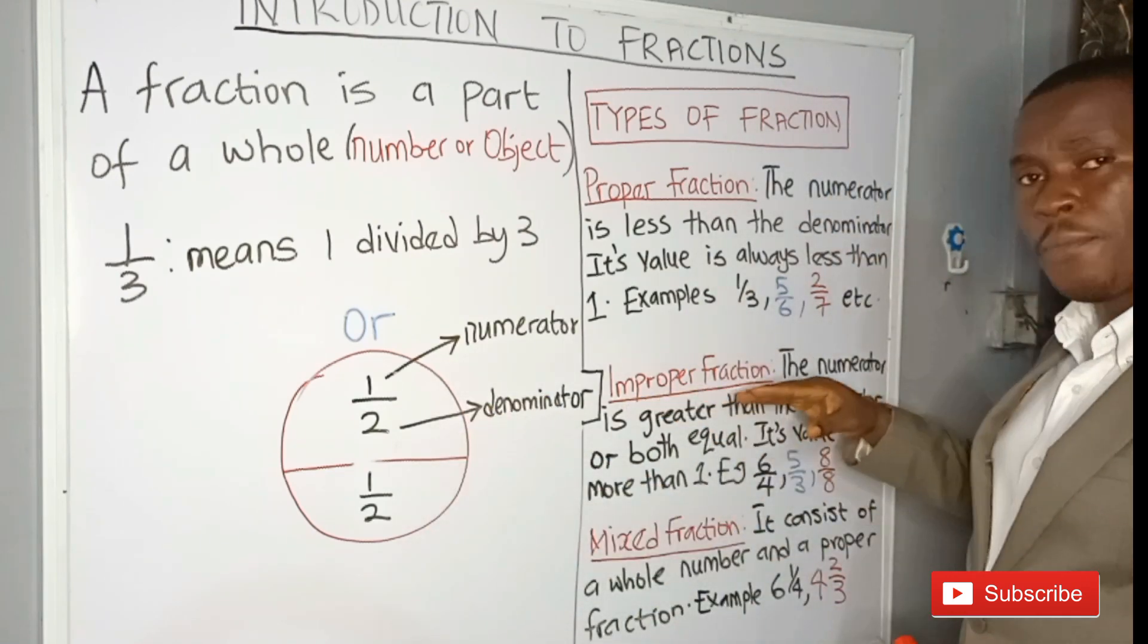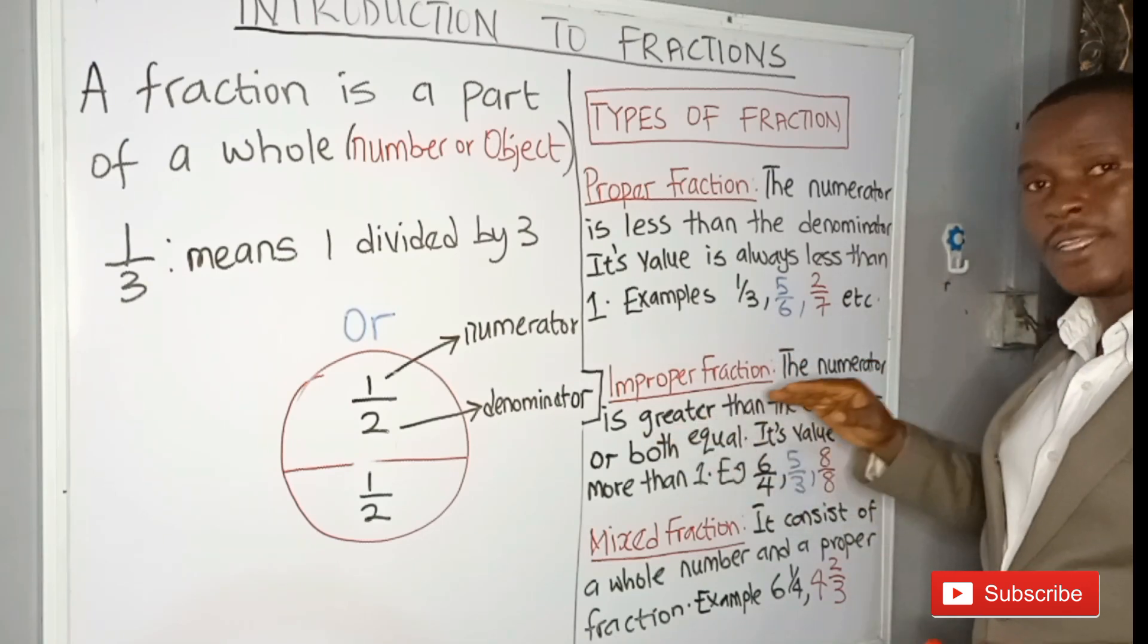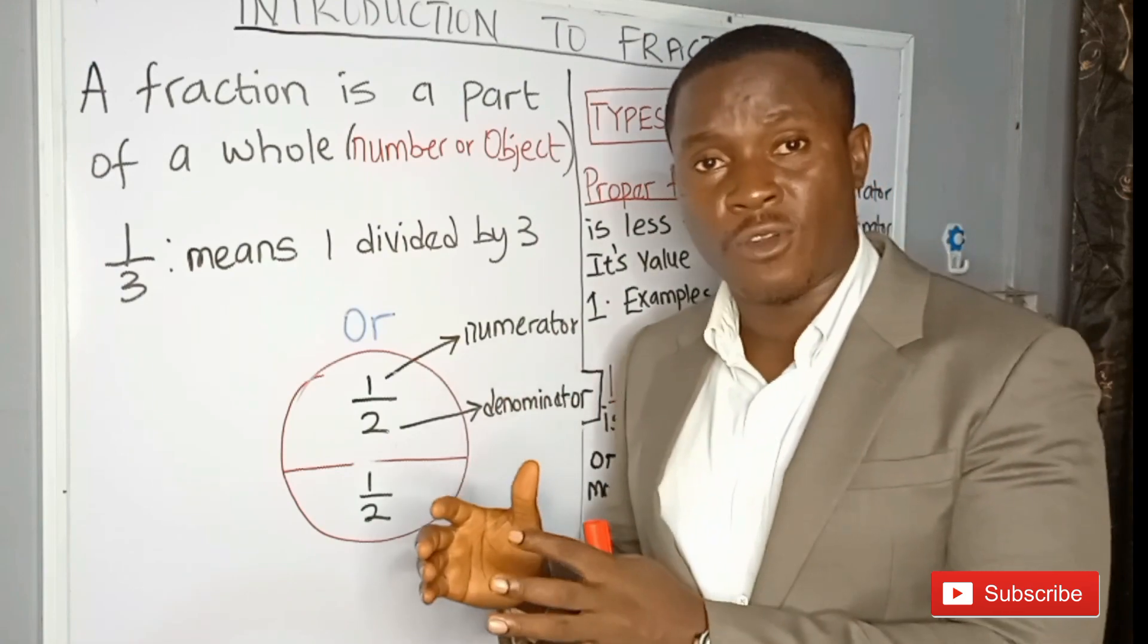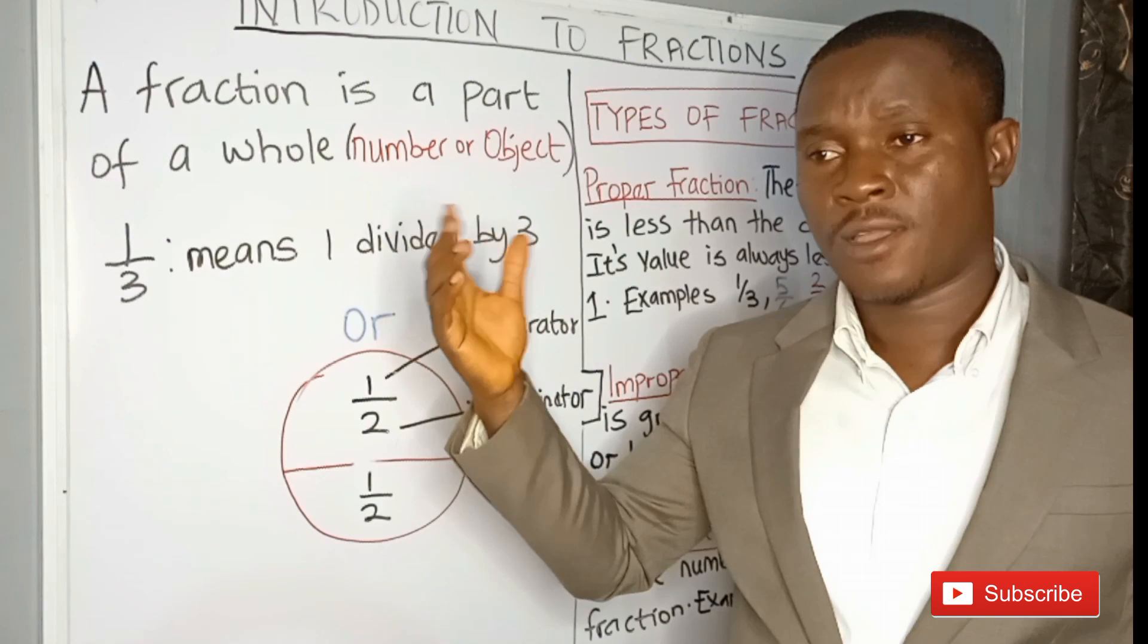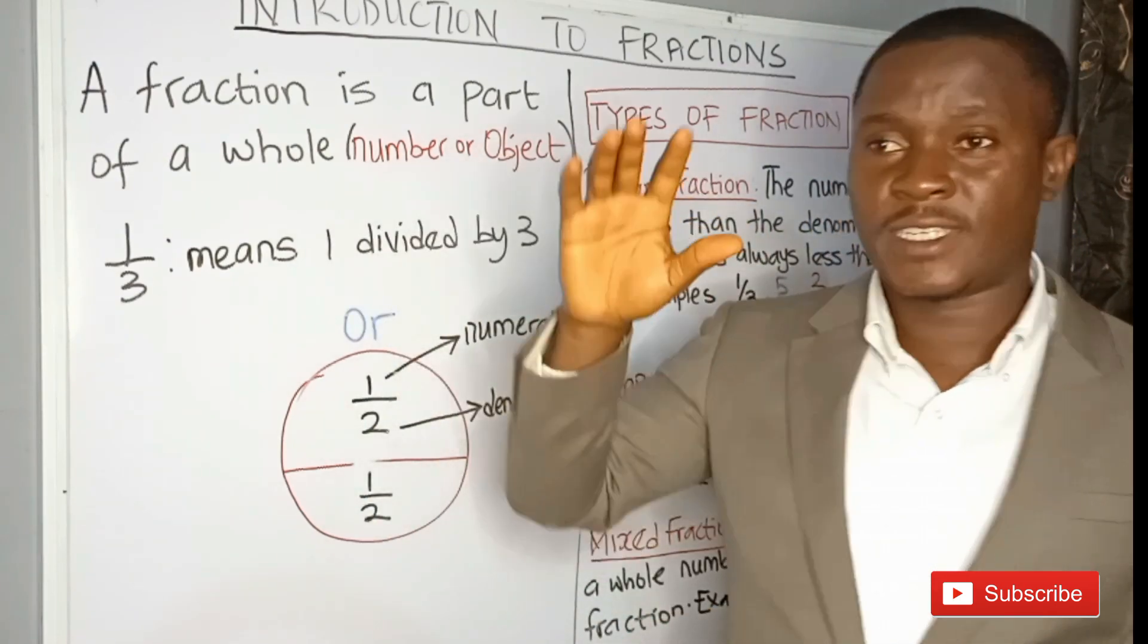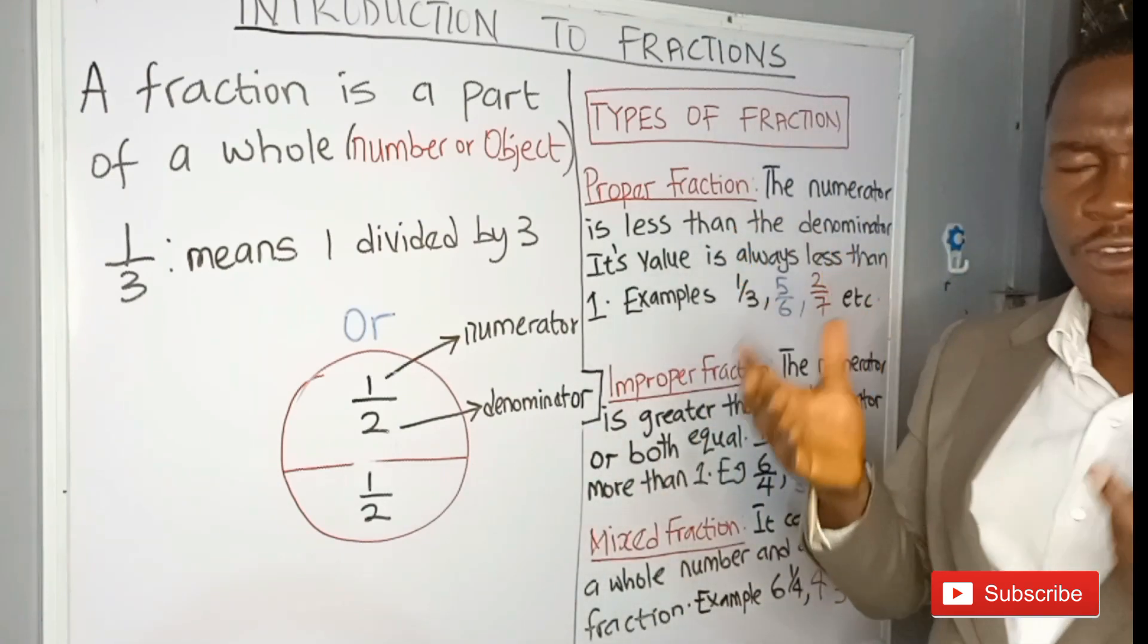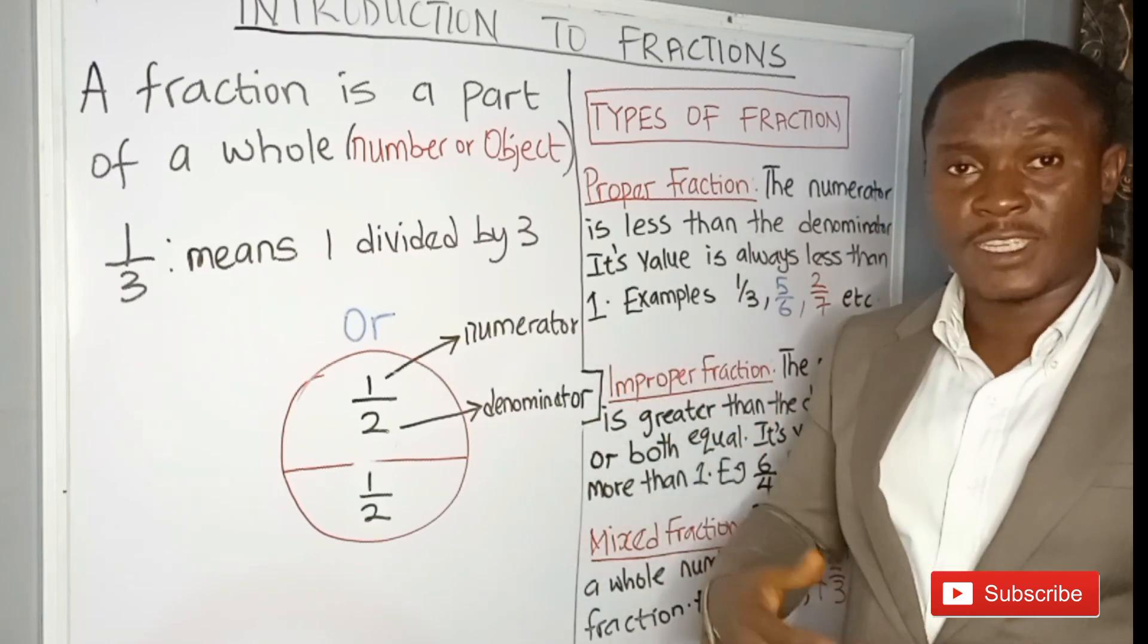Then we have the improper fraction. The numerator is greater than the denominator, or both equal. So in an improper fraction, the numerator is greater than the denominator. Let's go back to the example we have. But in this case, let's flip roles. A father is coming back from work and he sees his son at the doorstep. He runs towards his son so that his son will lift him up. Is that proper? Does it look nice? No, because the son can't lift the father up.